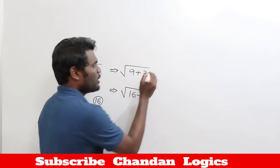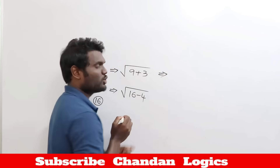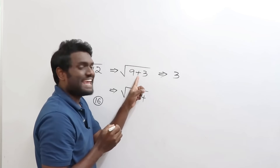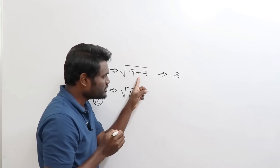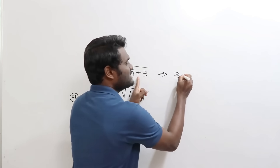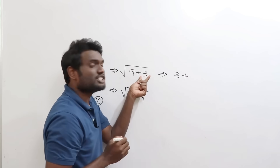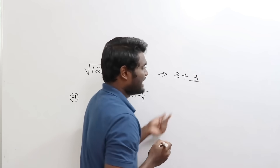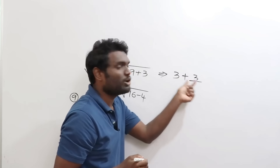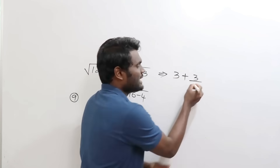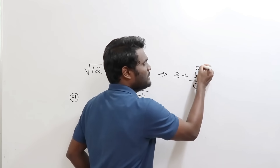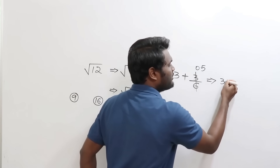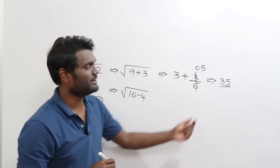Now I've written it as 9 plus 3. The square root of 9 is 3, so write 3. Write the same sign — as it is plus, write plus. It is 3 more, so write 3 divided by double of this value. Double of 3 is 6. When you simplify, this gives 0.5, so the value is approximately 3.5. Square root of 12 ≈ 3.5.